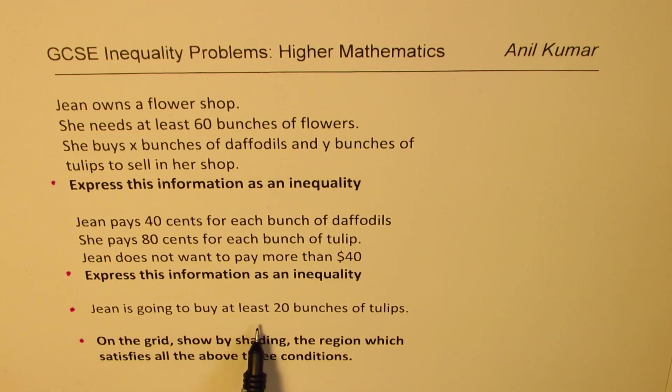Jean is going to buy at least 20 bunches of tulips. On the grid, show by shading the region which satisfies all the above three conditions. And the last part is to maximize the profit.